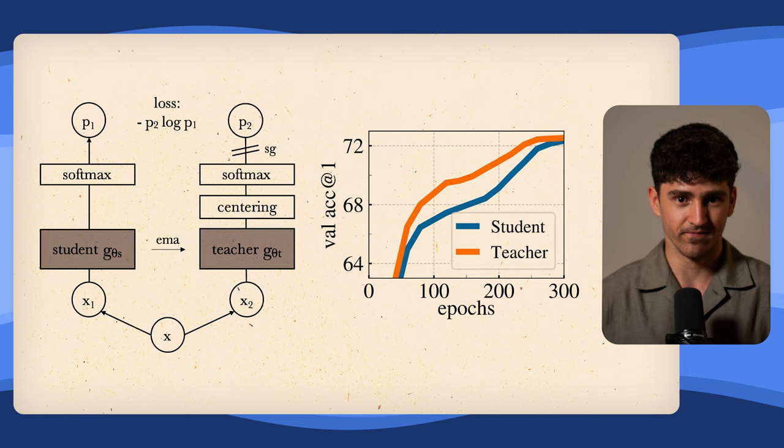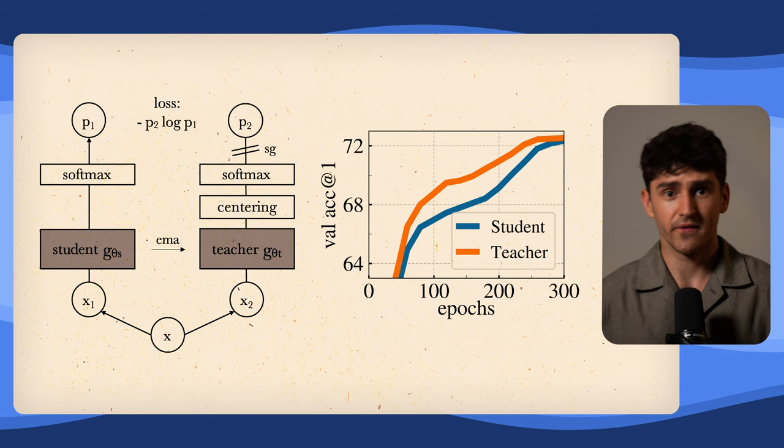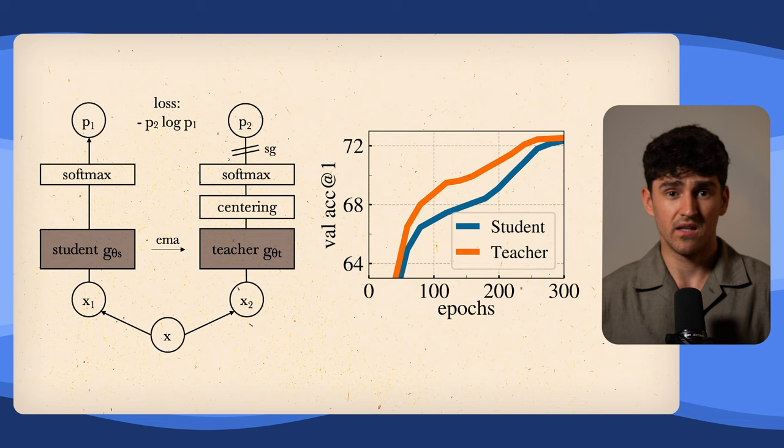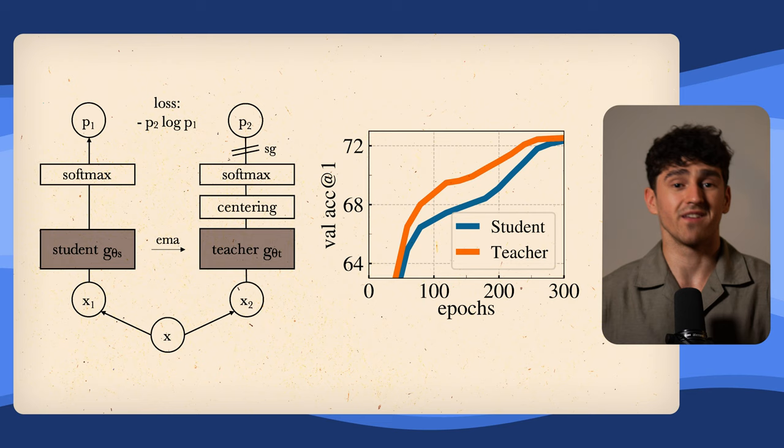The teacher does appear to be smarter than the student. And whenever the student improves, the teacher does so as well, since it is a more stable version of the student. Keyword exponential moving average. All that up to a certain point where the teacher doesn't have anything to teach anymore and both converge. How relatable.